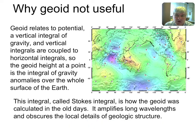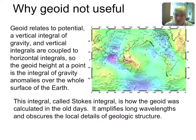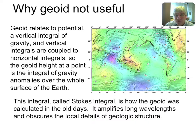We can now see why the geoid map is not useful for plate tectonics. The geoid is related to potential by Bruns' formula; potential is a vertical integral of gravity anomalies; but vertical integrals are coupled to horizontal integrals through Laplace's equation. So the geoid height at a point is really a horizontal integral of gravity anomalies over all the Earth. In Stokes' equation, the weight given to each gravity anomaly falls off very slowly with distance, so the geoid is a smoothing operator that obscures local tectonic details we're looking for.